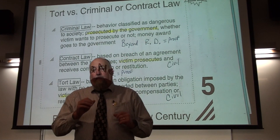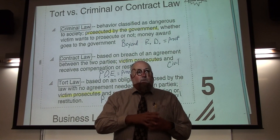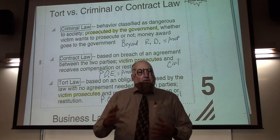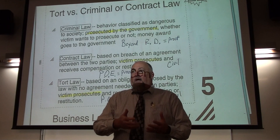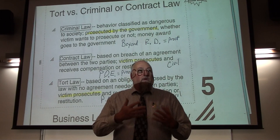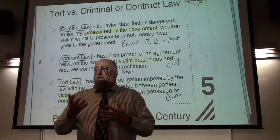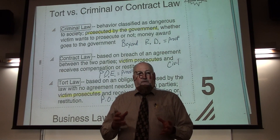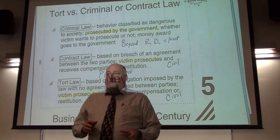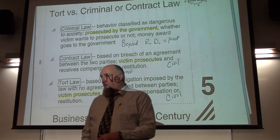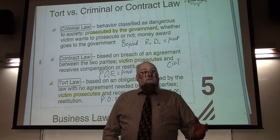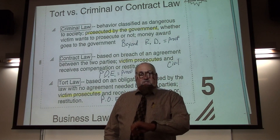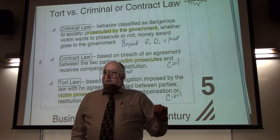If a person is convicted of a crime, they're essentially automatically at fault in civil court, because they've already been convicted on a higher standard of proof — beyond a reasonable doubt. So if you're convicted of murder, you're essentially automatically liable for wrongful death. A common situation is somebody convicted of DUI who gets into a car wreck and hurts somebody — they're then sued in civil court for the injuries caused, and they're essentially automatically at fault.